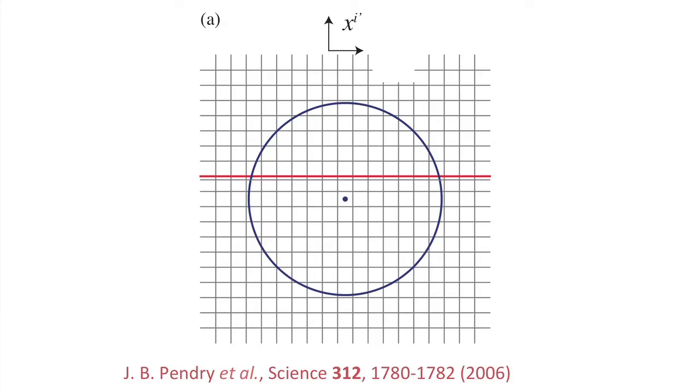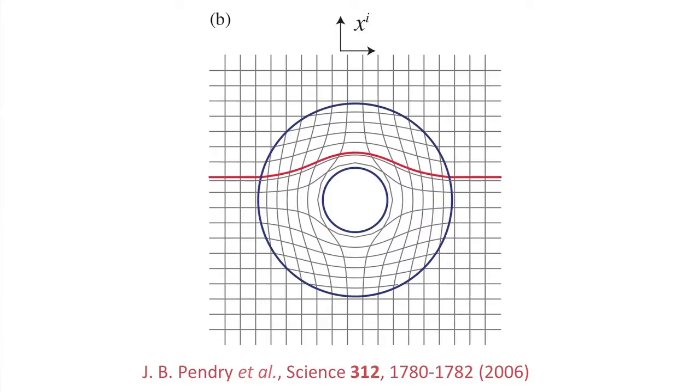Invisibility cloaking is really a problem that is very difficult to solve with traditional optical design methods. In the first paper, it was considered that when you look at light propagation through empty space — through vacuum — light beams follow straight paths. But when you express this same physical phenomenon on a curved coordinate system, this straight path will appear to be bending and will follow the transformation of the coordinates that you're implementing. This is quite a mathematical trick — we're just expressing something in a new coordinate system.